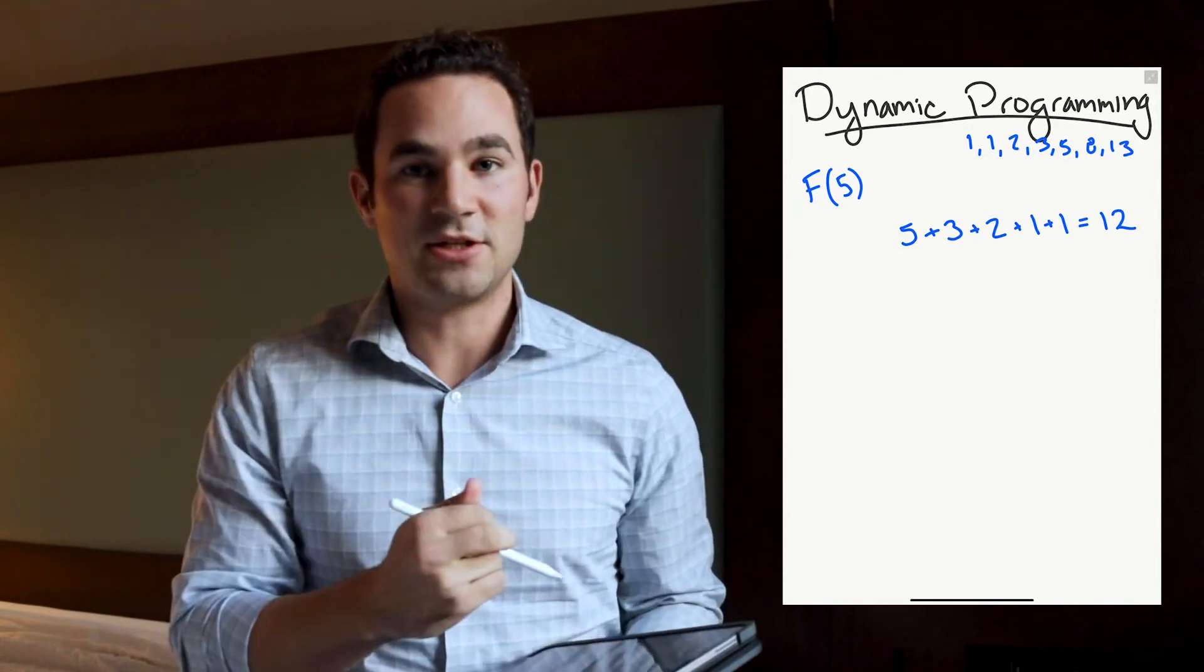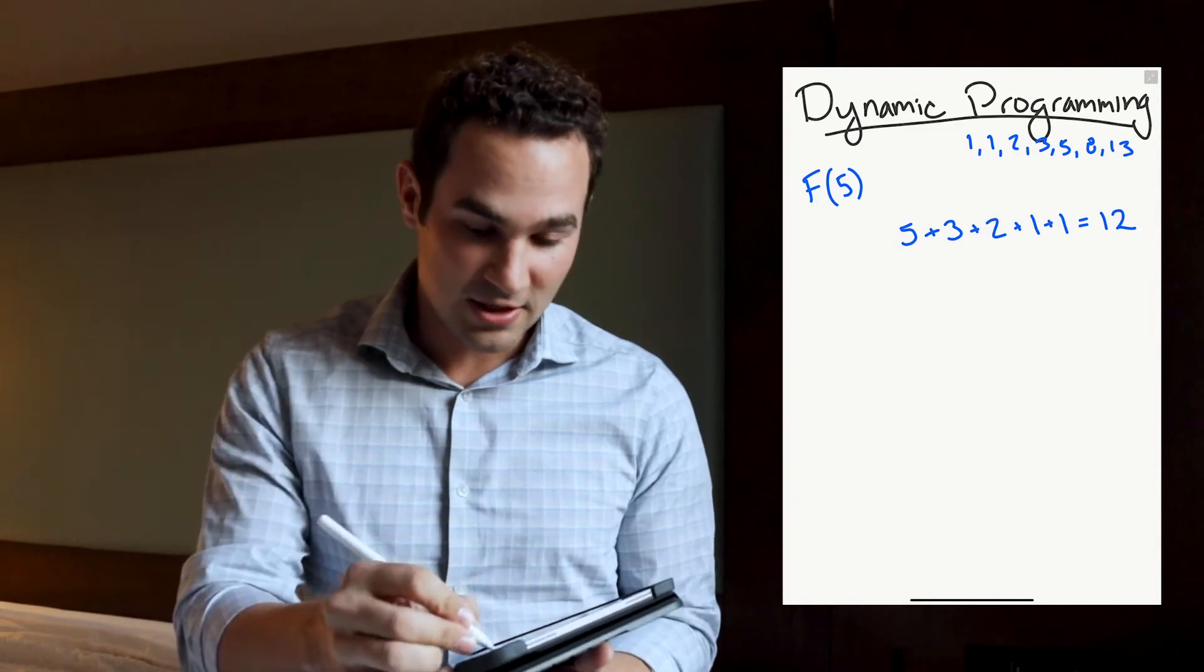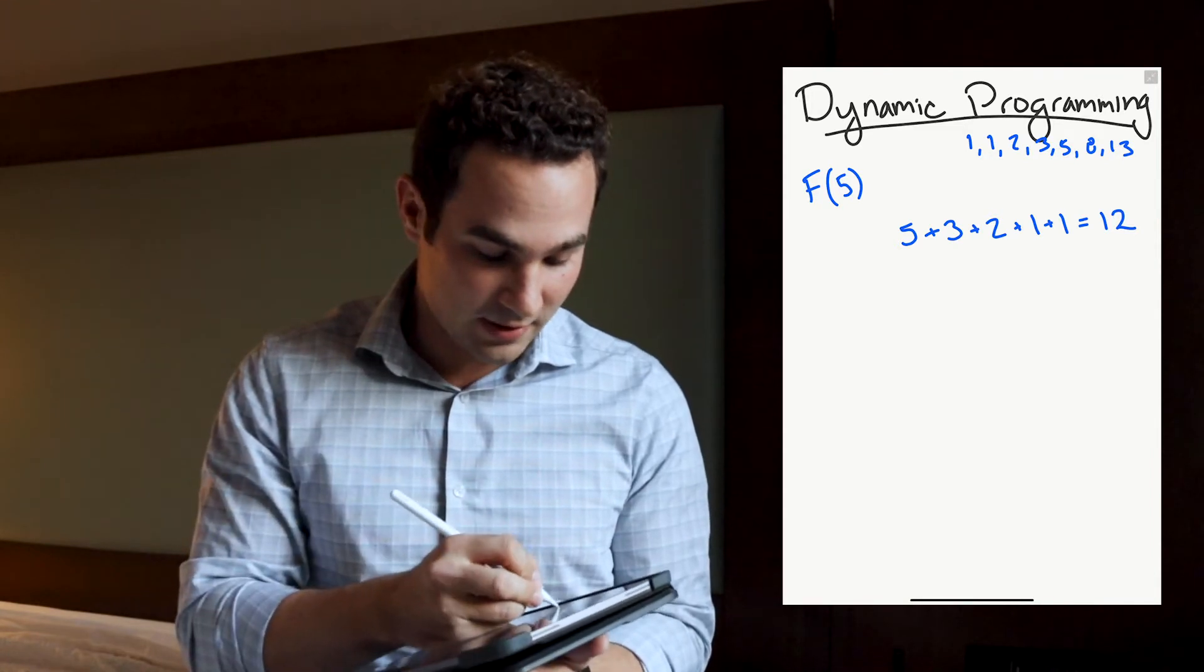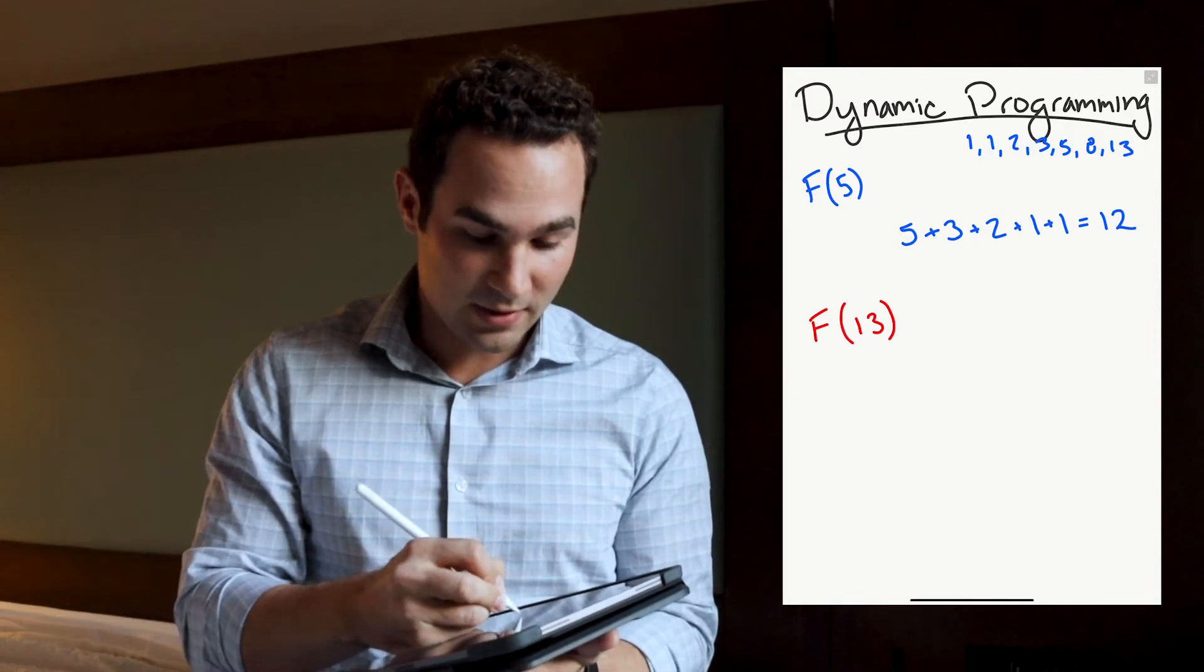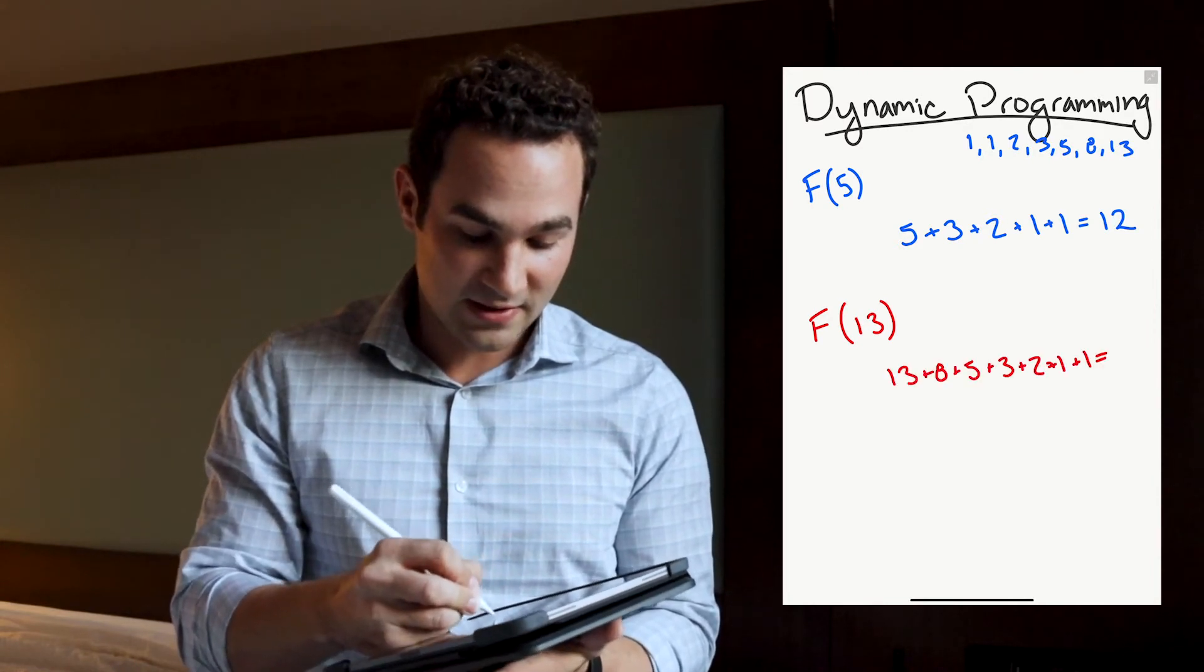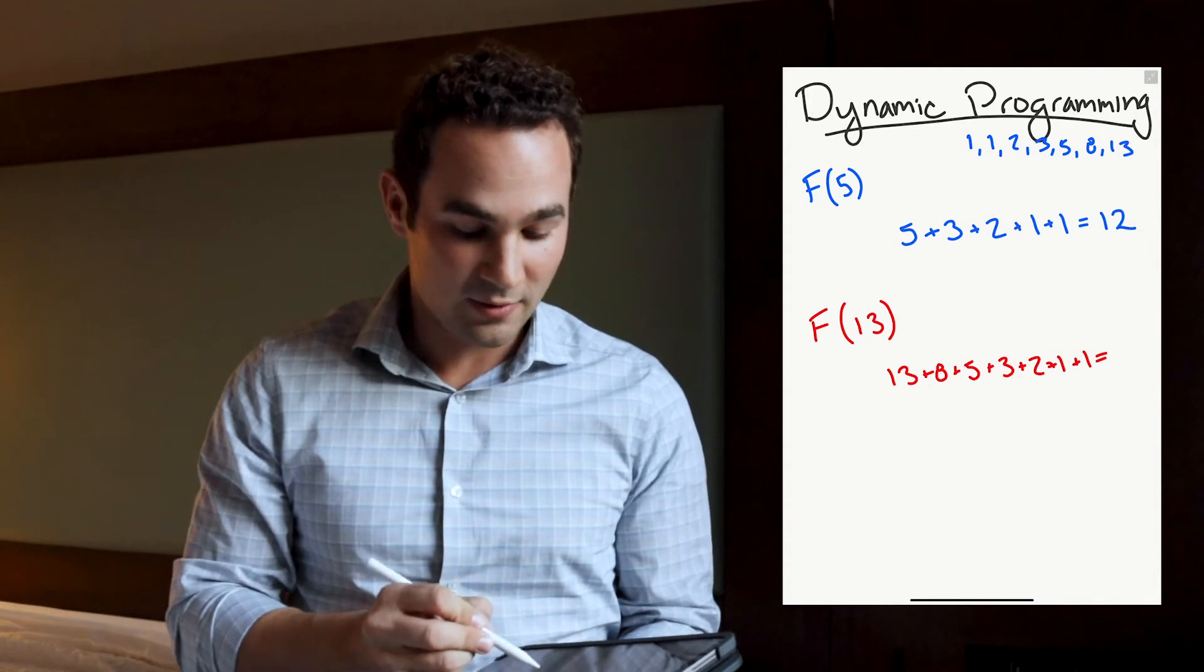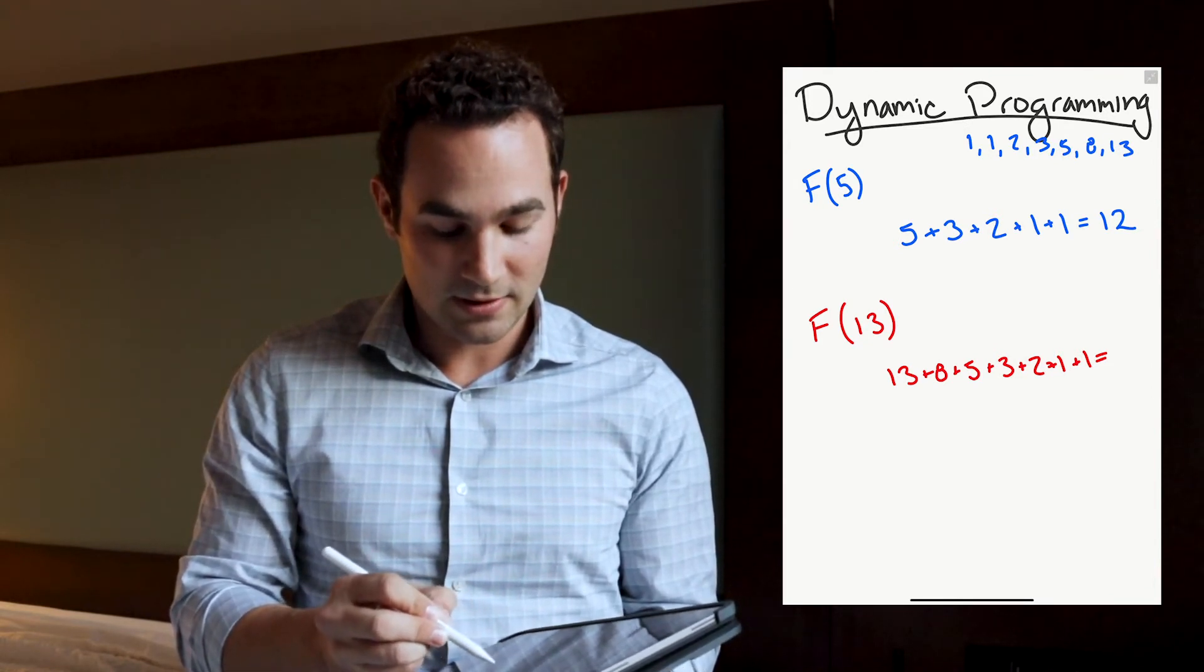Now, as you do that addition, then you say, okay, well, now I want to find, let's change our color here. Now, I want to find the value of the same thing, but for 13. Now, you have to do 13 plus eight plus five plus three plus two plus one plus one. Now, in this case, you're doing 21, 26, 30, 33.